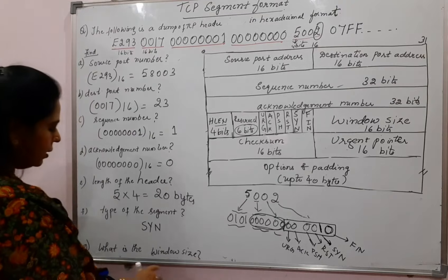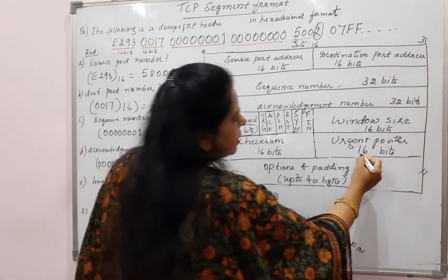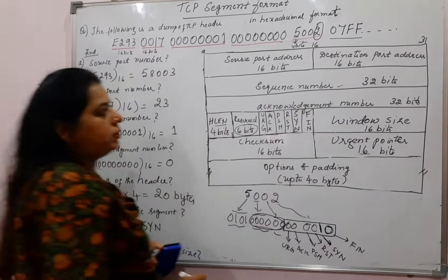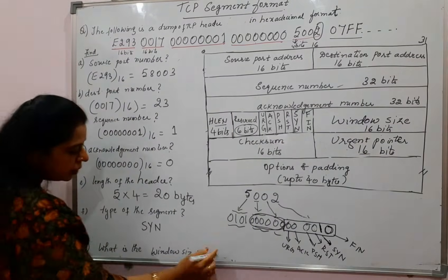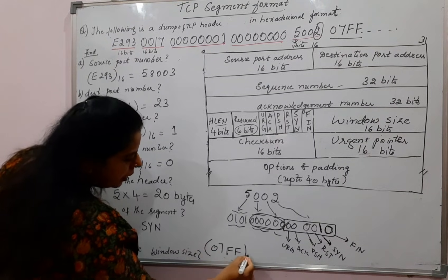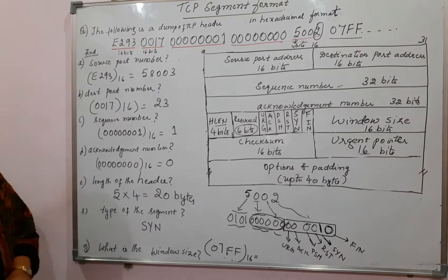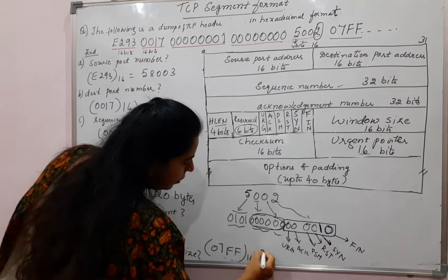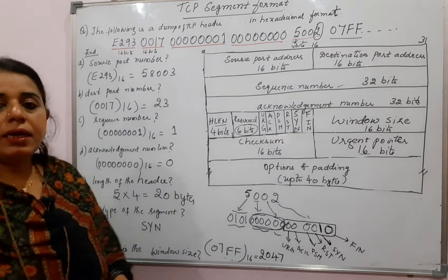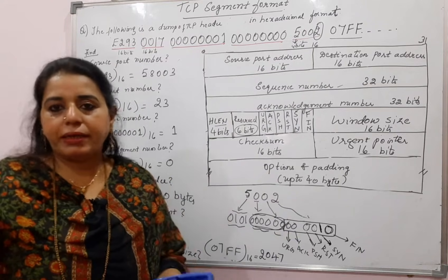Next, what is the window size? The window size is 16 bits, and here the value given is 07FF in hexadecimal. Convert this into decimal and you will get the value as 2047. The segment is indicating that the window size is 2047 bytes.